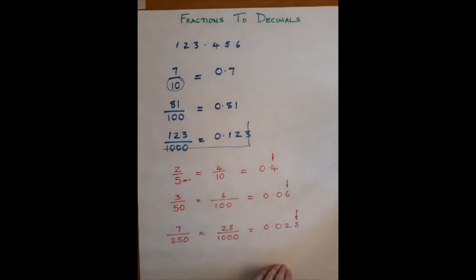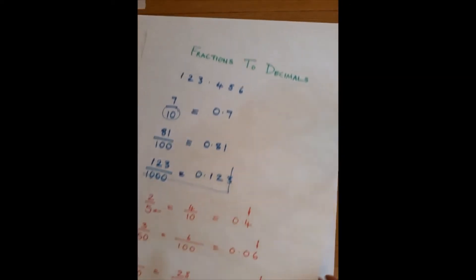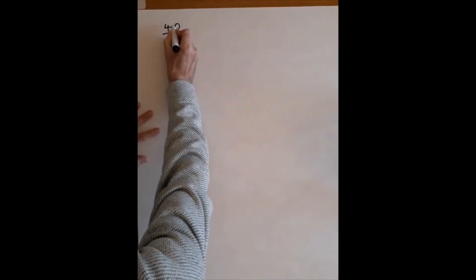Let's move on to the final method that I'm going to show you for converting fractions to decimals. So I'm going to take you all the way back to junior school, and this is where you should have met how to do longhand proper division. So let's suppose we have a number like 40 divided by 2.